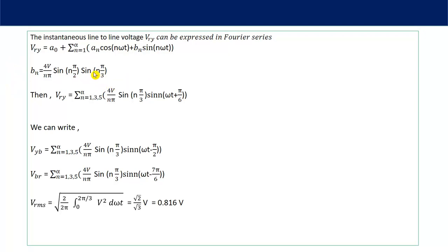One more important observation: looking at sin(nπ/3), when n = 3 it gives sin(π) = 0, when n = 6 it gives sin(2π) = 0, when n = 9 it gives sin(3π) = 0. So triplen harmonics (3rd, 6th, 9th, 15th...) are also absent from the line voltage. This is a key advantage of the 3-phase system — since both even harmonics and triplen harmonics are absent, the total harmonic distortion (THD) is lower and the output waveform quality is better compared to a single-phase system, which is one reason 3-phase systems are more popular in industrial applications.